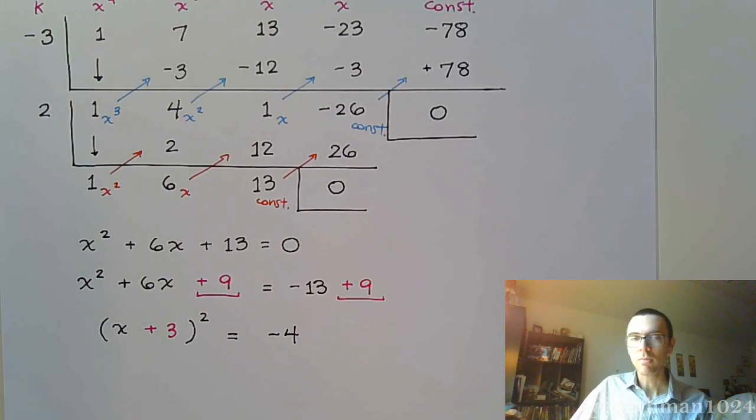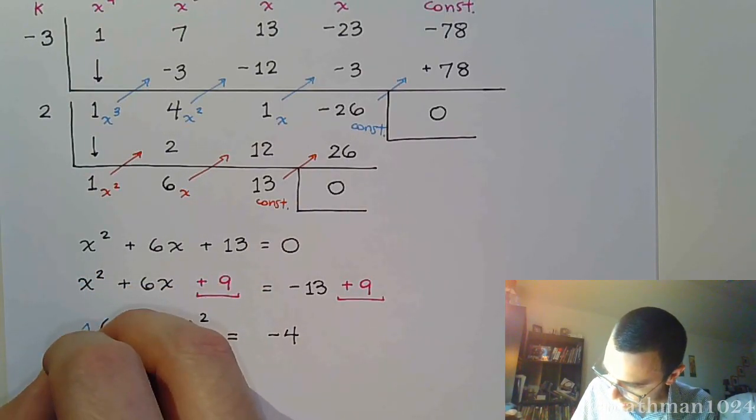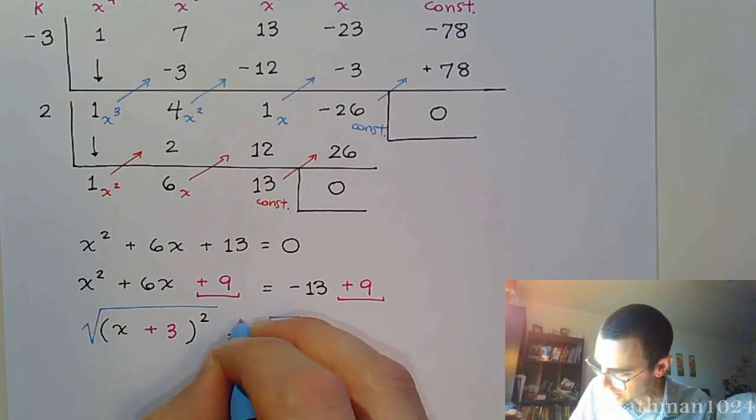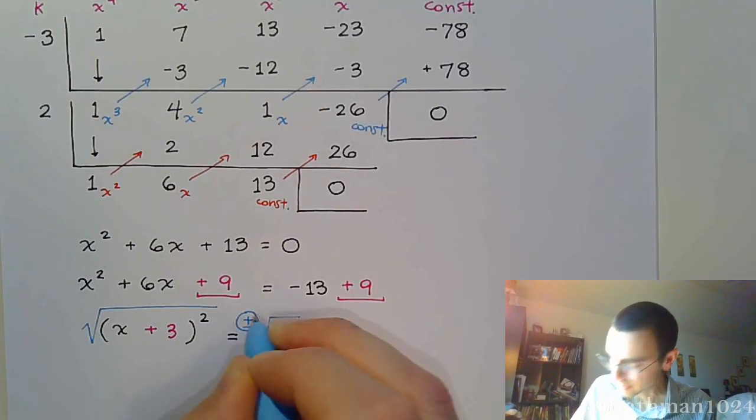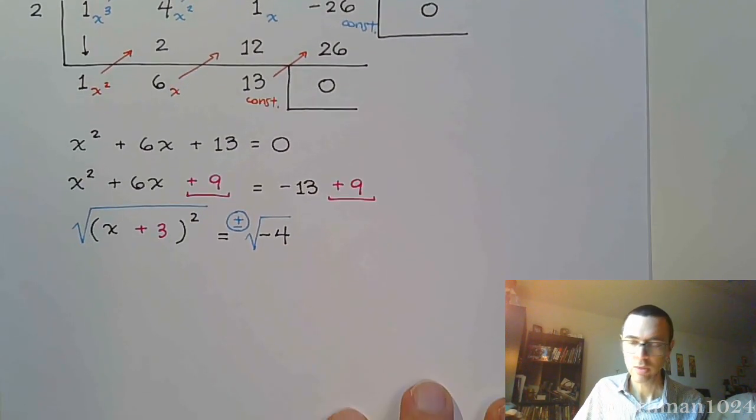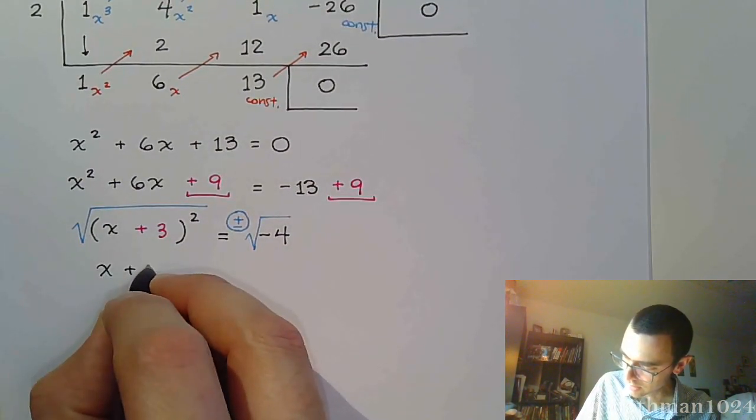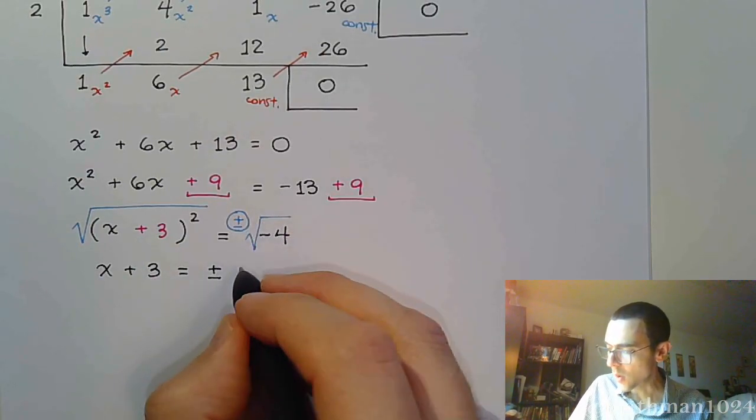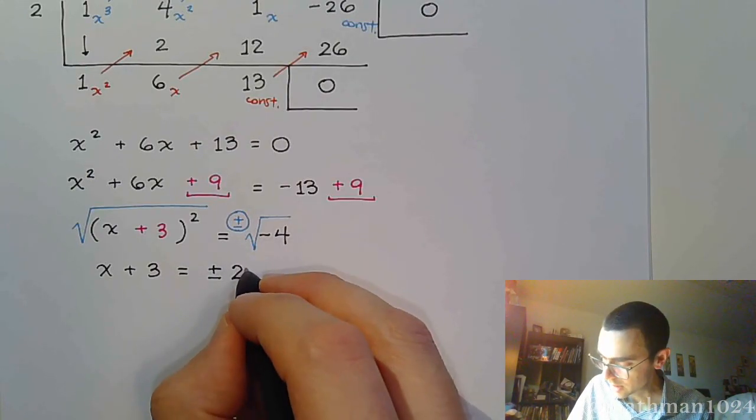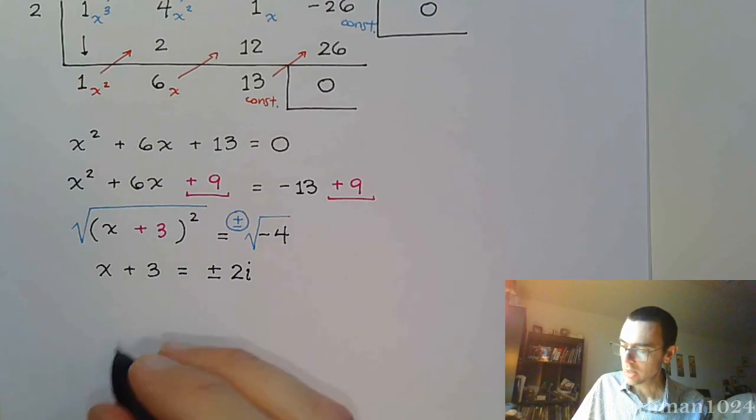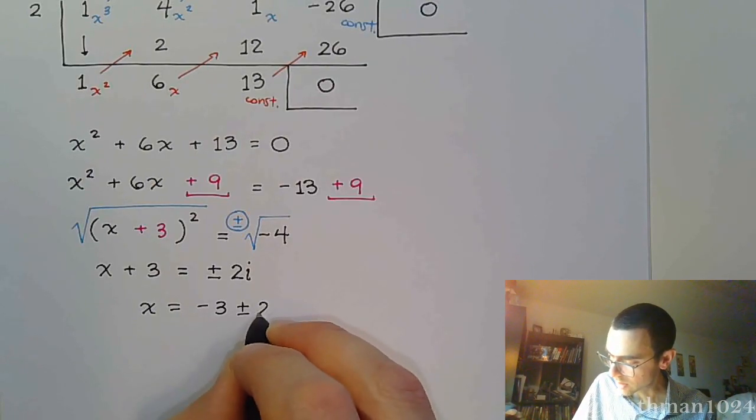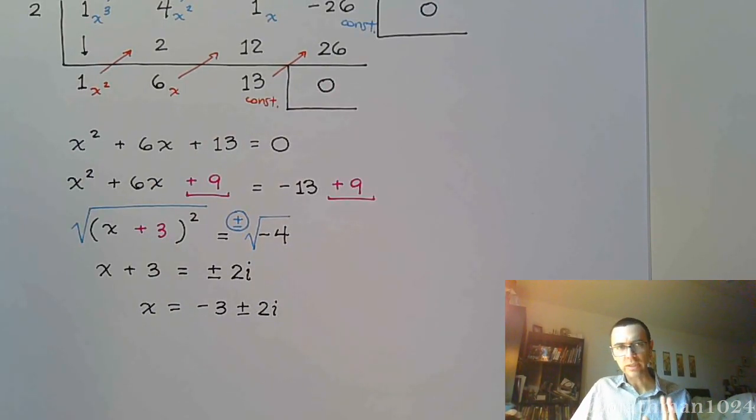And now, we use the square root property to finish this. So let's take the square root of both sides. Don't forget your plus or minus. All right, so we have x plus 3 is equal to plus or minus. The square root of 4 is 2, and the negative here gives us i. Finish getting x by itself, so x is equal to negative 3 plus or minus 2i. So yes, there's a lot going on here in this problem, but piece by piece, it's really not that bad.